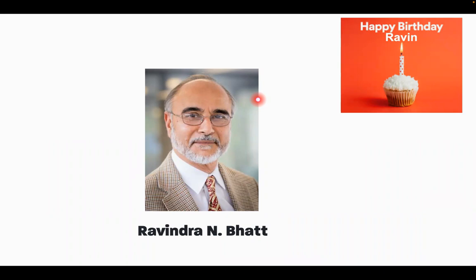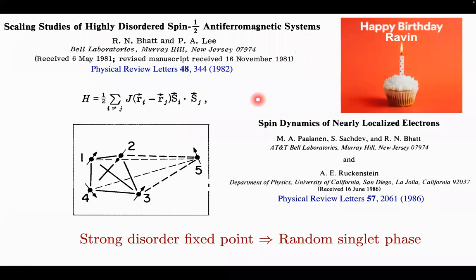I want to begin by actually recalling a very famous work by you in this paper with Patrick Lee of spins—this was modeling semiconductors in random positions with an exchange that decays exponentially between them—and by an RG analysis of this type of model, what Revin found was a strong disorder fixed point where the spins freeze into singlets in a hierarchical manner, and this is now what's called the random singlet phase. You will notice this is in 1986, just before the cuprates were discovered.